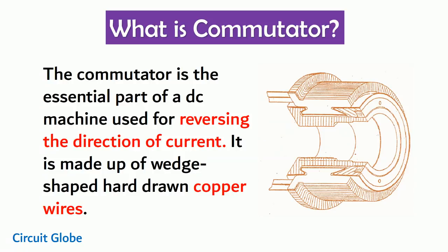First of all, you have to understand what is commutator. Commutator is the most important part of the DC machine. It is generally used for reversing the direction of current. If we are talking about DC generator, in DC generator, the commutator converts the alternating current into the direct current.